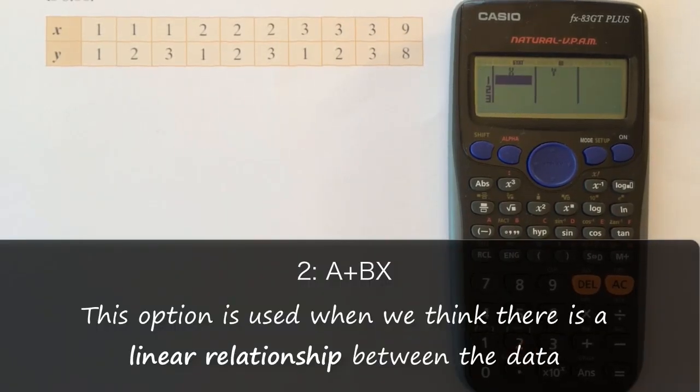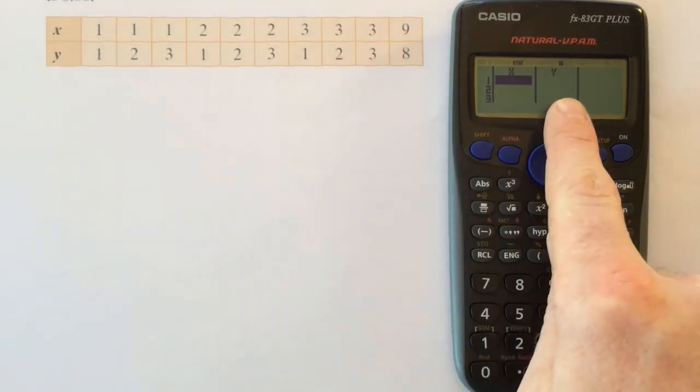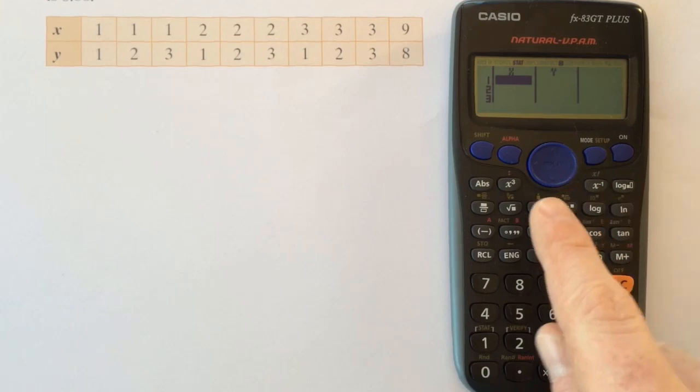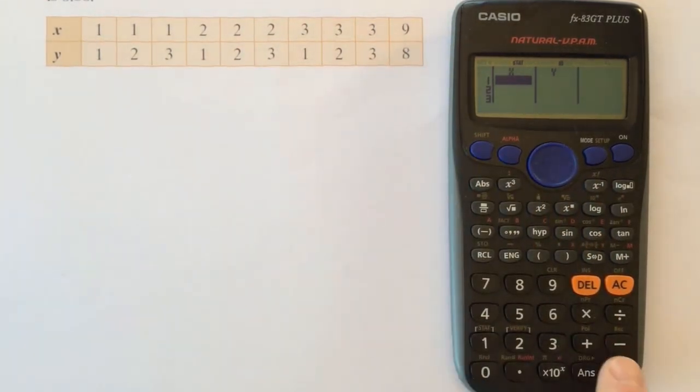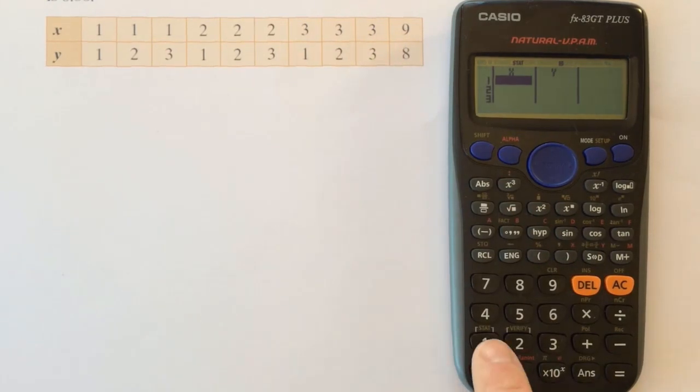I'm checking to see if there's a linear relationship between data x and data y. So now I want to enter the data from the table into my table here. So to do this I would enter in a number and press equals each time. So I'm going to enter in all the x data first. It's just easier that way. So 1 equals.